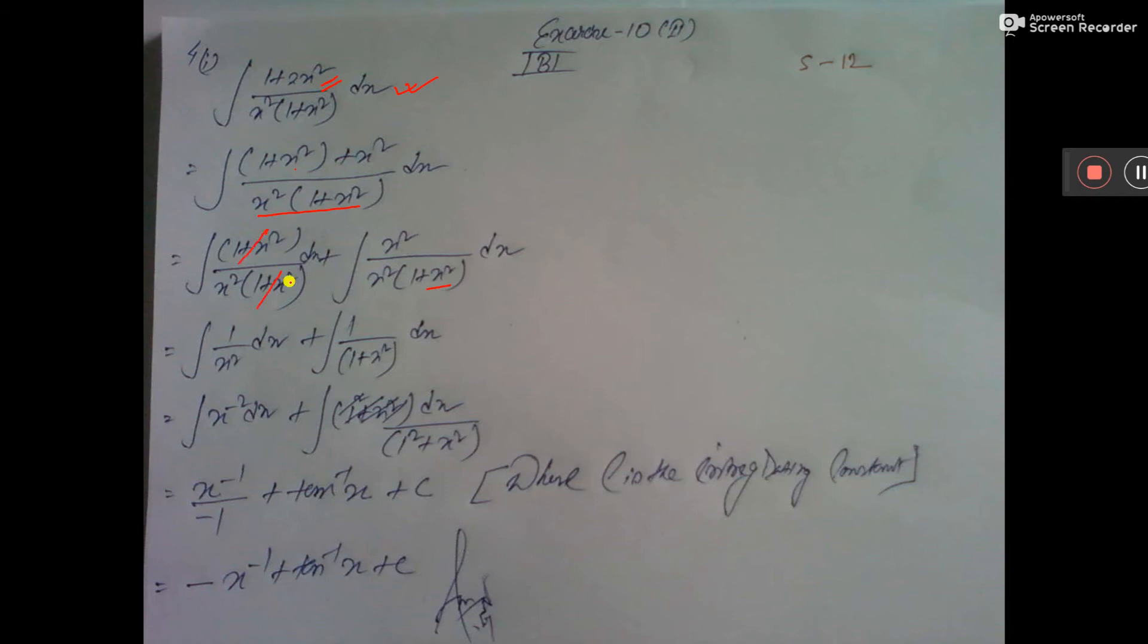Then this will cut, this will cut. So here it will be 1 by x squared dx and here is 1 by 1 plus x squared dx.